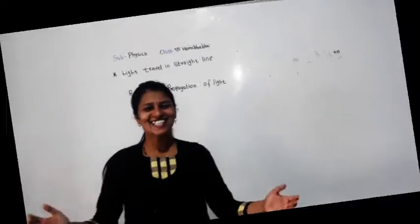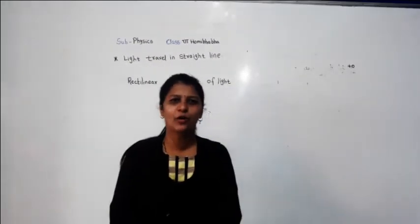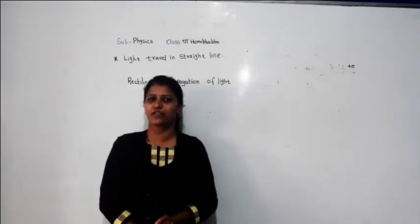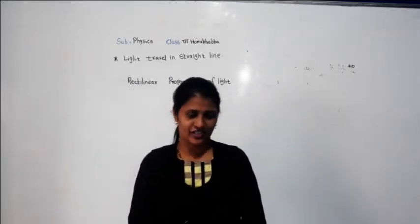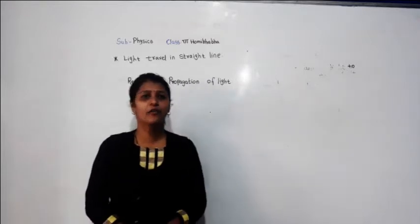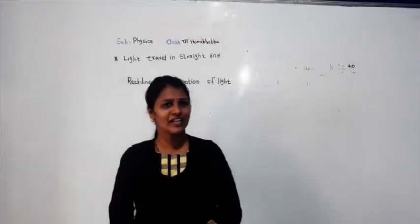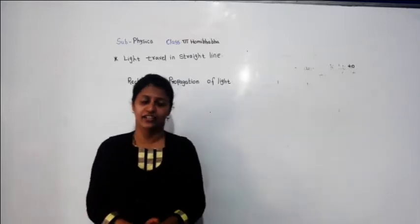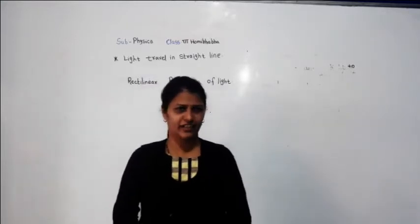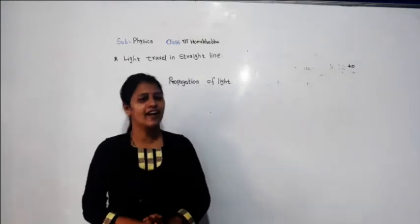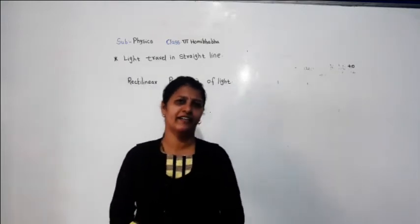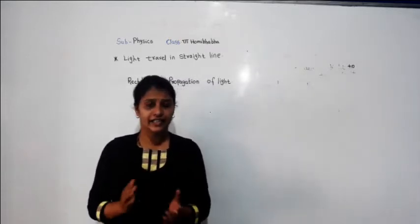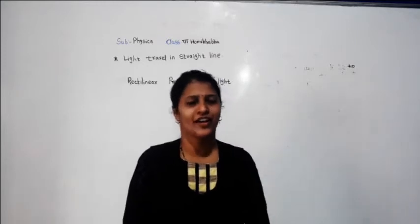Hello dear students. In the last video we learned about types of light — there were two different types: natural and artificial. Then we learned the concept of luminous and non-luminous, and also discussed the transmission of light. There are three types of material — can you recall that? Transparent, translucent, and opaque. I hope everyone has taken notes and gone through them.